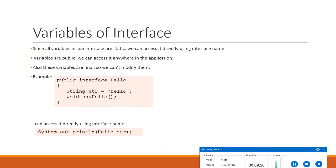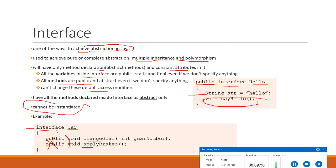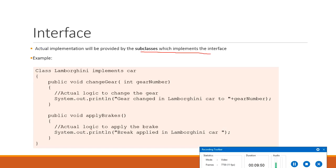Here is an example: we created interface Car with two methods — changeGear taking an integer parameter and applyBrakes with no parameter, both void. To use this interface, class Lamborghini implements Car. Here we use 'implements' instead of 'extends'. Inside the class, we provide the implementation of changeGear and applyBrakes according to program needs. This is how methods of the interface must be implemented in the class.